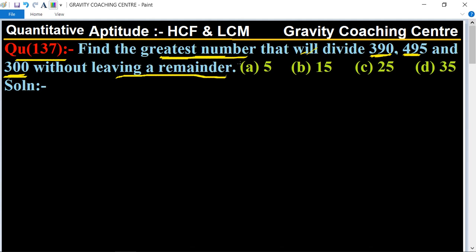This question is very simple. In this question, find the greatest number that will divide 390, 495, and 300 exactly without any remainder. First of all, we will find their HCF by shortcut method.